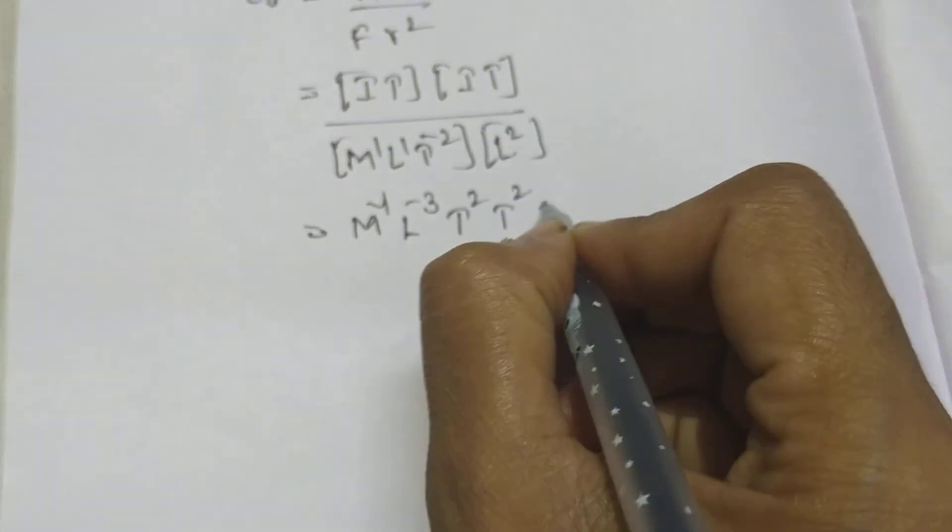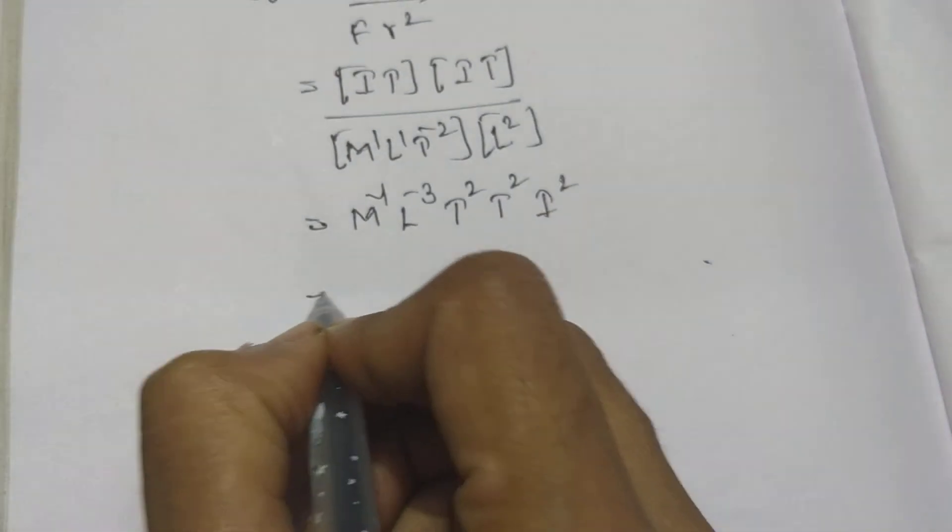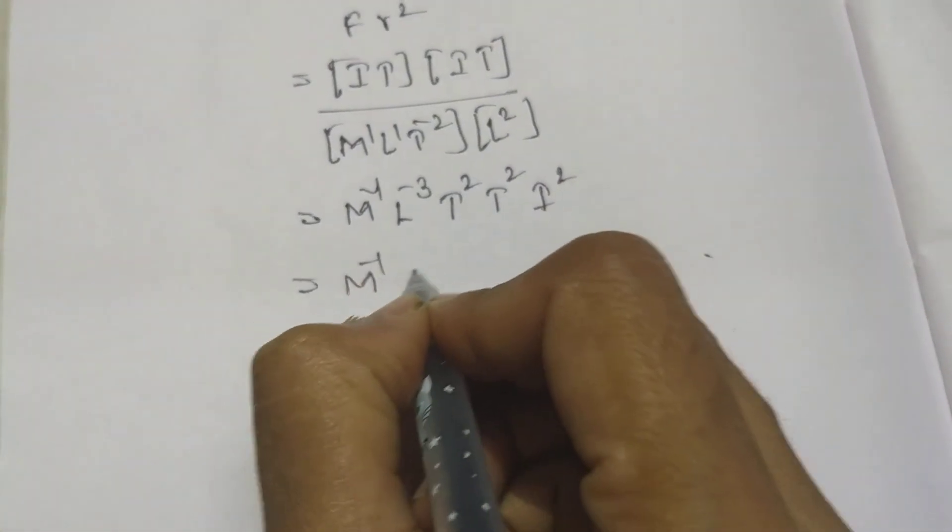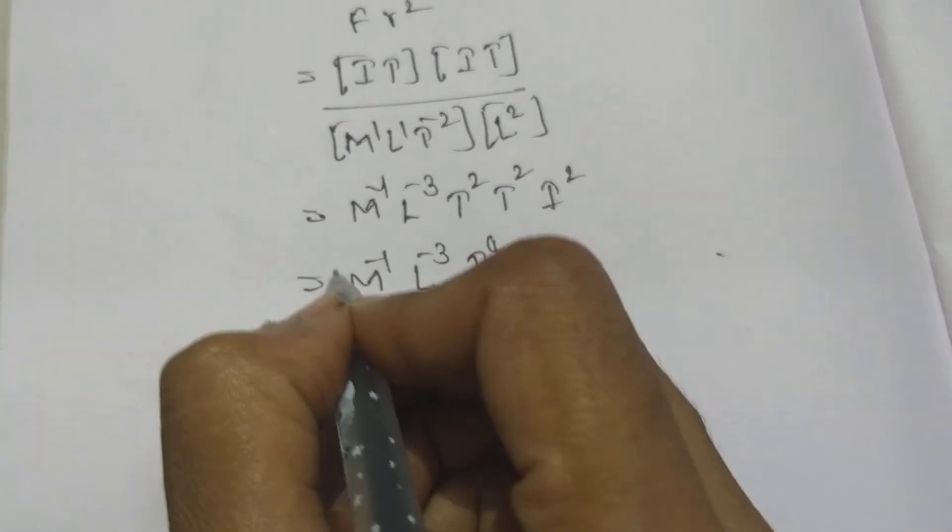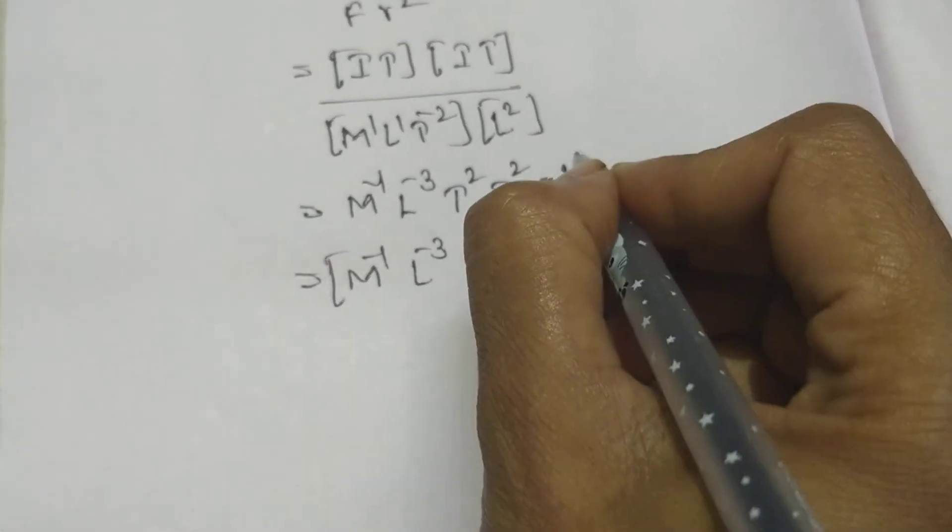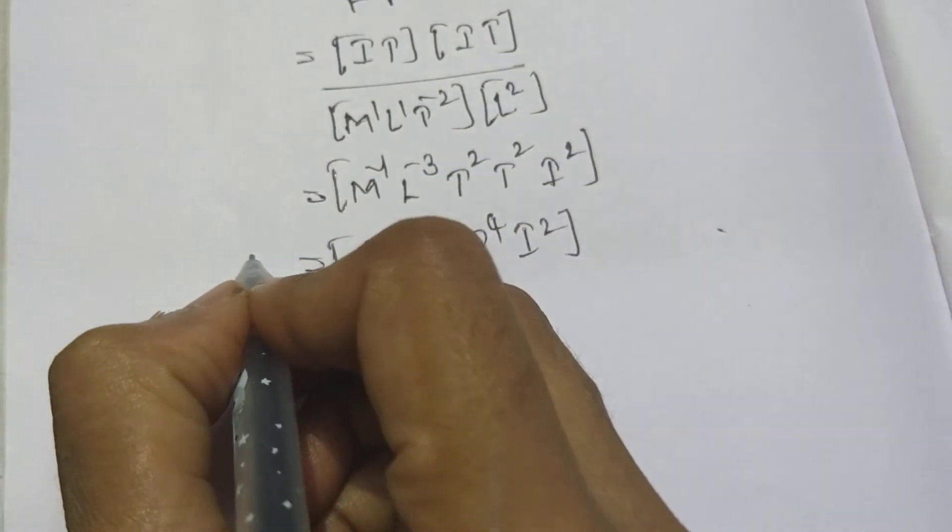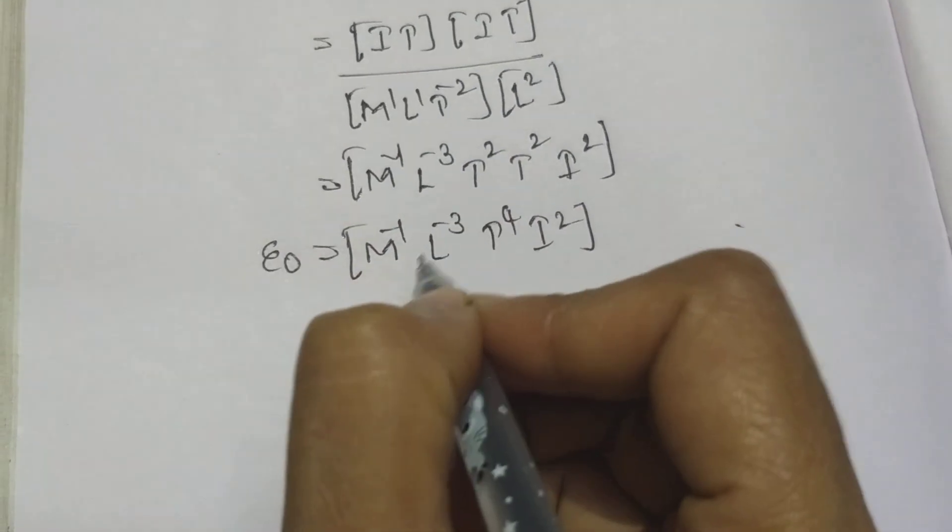I into I, I square. Then you will get M power minus 1, L power minus 3, T power 4, I power 2. This is the dimensional formula of permittivity of free space.